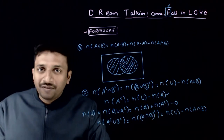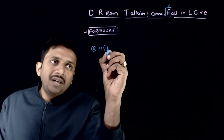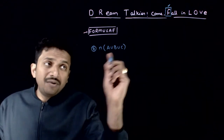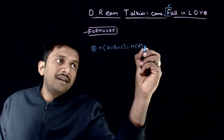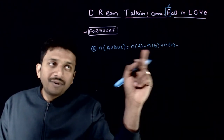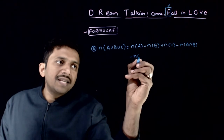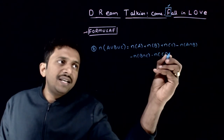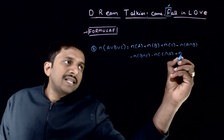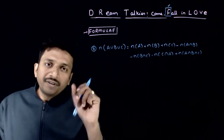Now the last formula of this chapter: N of A union B union C, when you have more than two sets. N of A union B union C equals N of A plus N of B plus N of C, minus the intersections of each pair of sets — N of A intersection B, minus N of B intersection C, minus N of C intersection A — plus N of A intersection B intersection C.